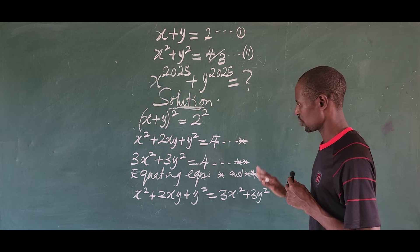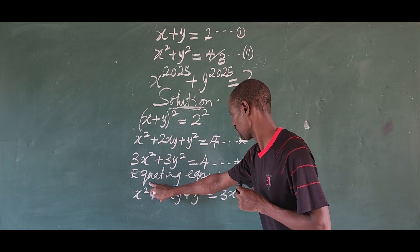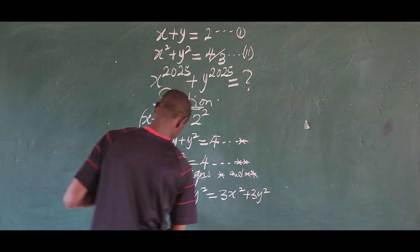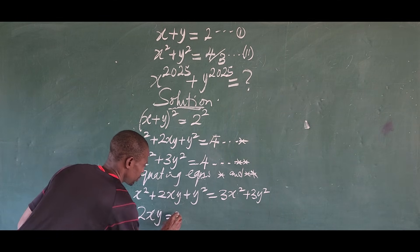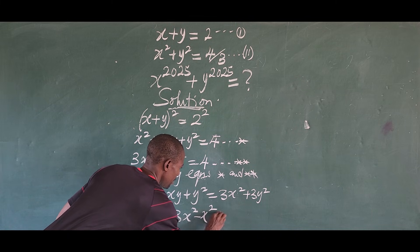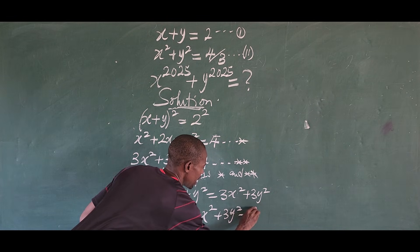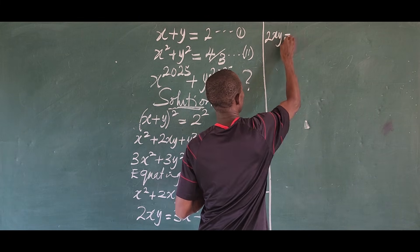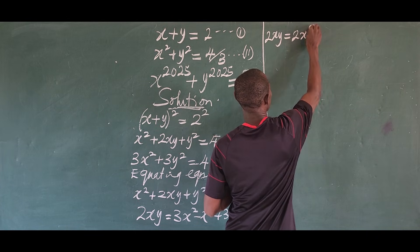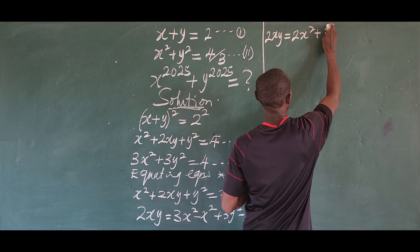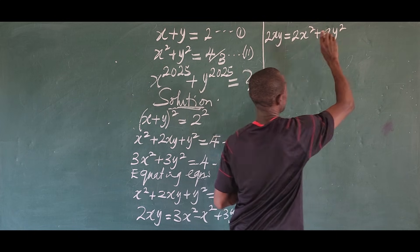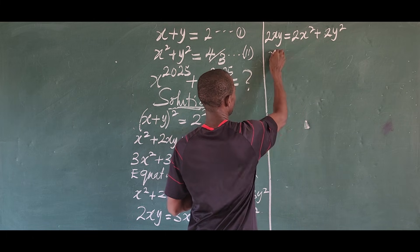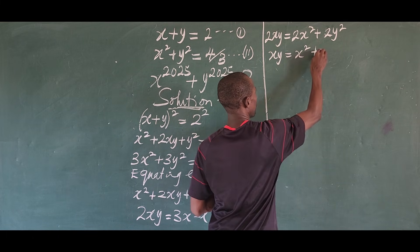Now we collect like terms. We have x squared on both sides and y squared on both sides. Cancelling them, we are left with 2xy equals 3x squared minus x squared plus 3y squared minus y squared, which simplifies to 2xy equals 2x squared plus 2y squared. Dividing through by 2, we get xy equals x squared plus y squared.